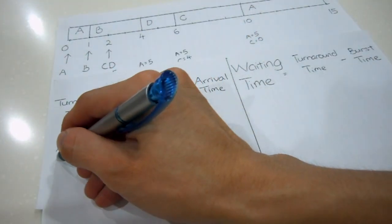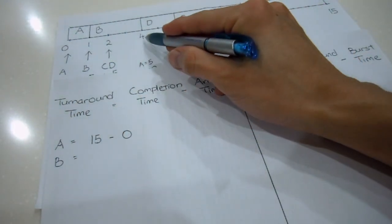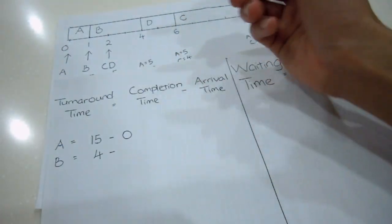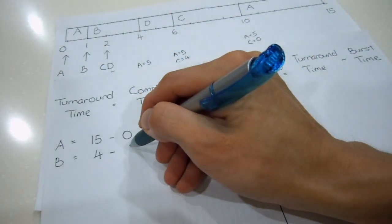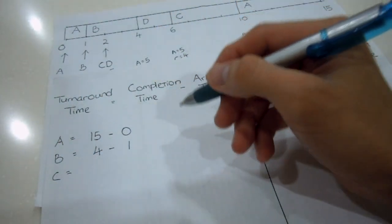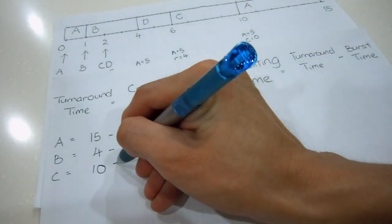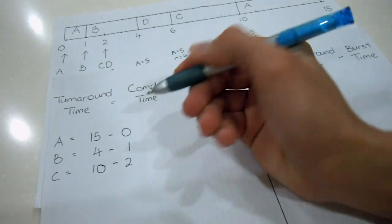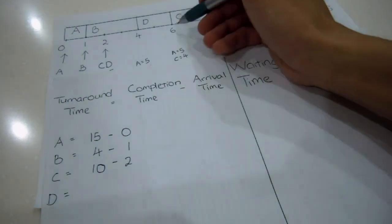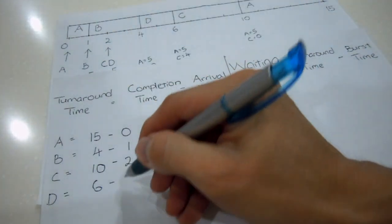Now the same thing applies for B. The completion time for B is 4 milliseconds minus the arrival time of 1. For C, the completion time is 10 milliseconds and the arrival time is 2 milliseconds. And for D, I have the completion time of 6 milliseconds minus the arrival time of 2 milliseconds.